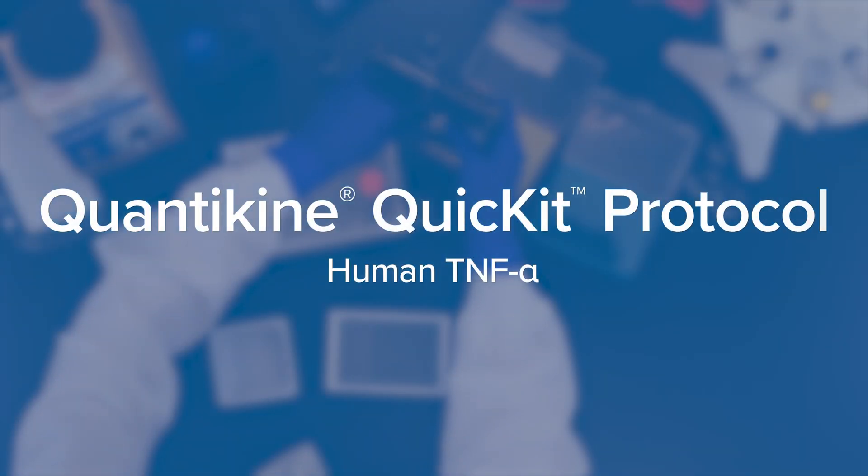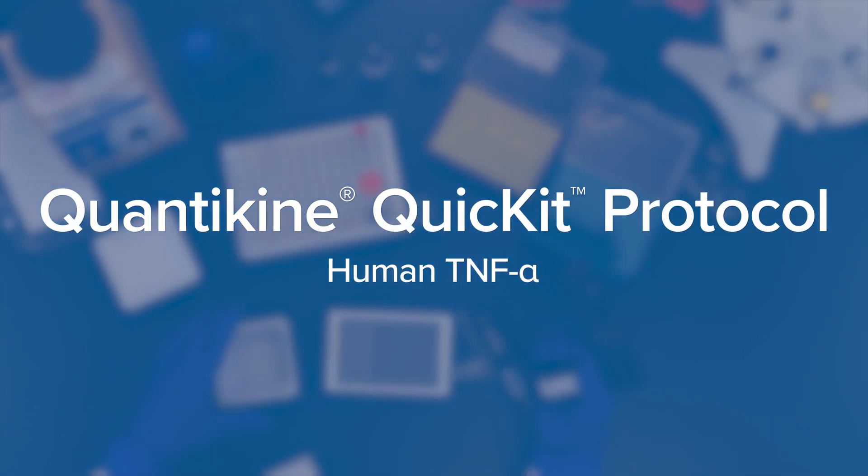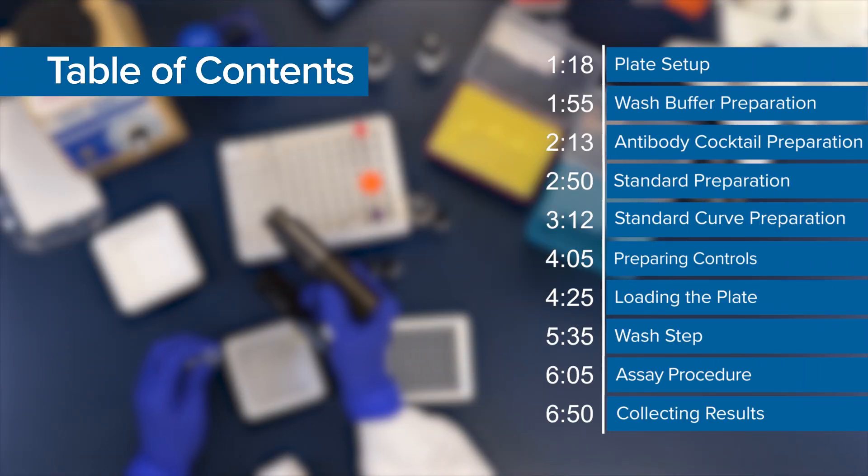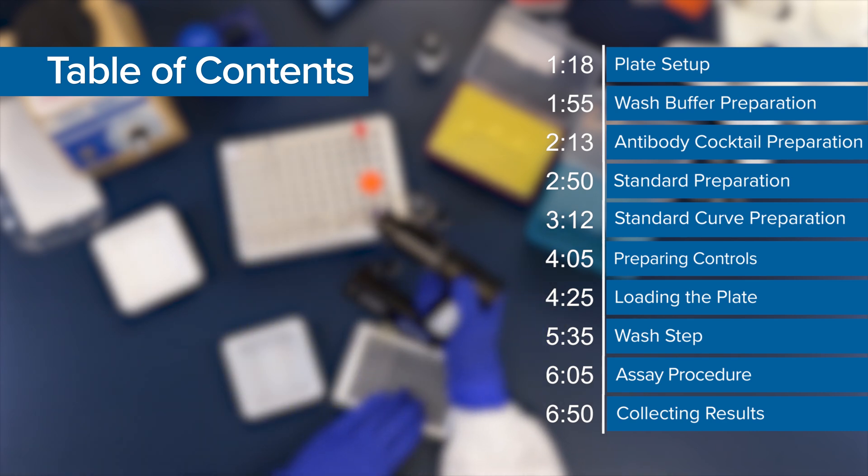This video is a general step-by-step guide for running an R&D Systems Quantikine QuickKit ELISA. QuickKit ELISAs offer a shortened protocol of under 90 minutes with a single wash step for the detection of proteins in various sample types.